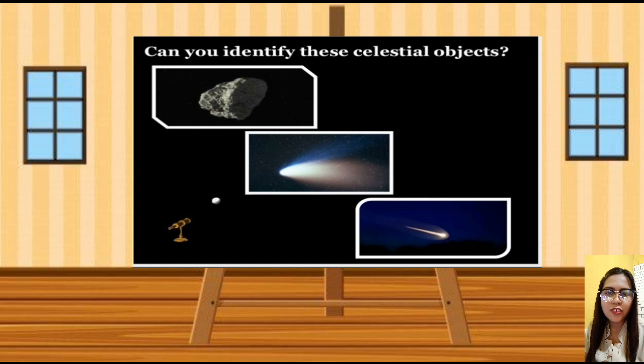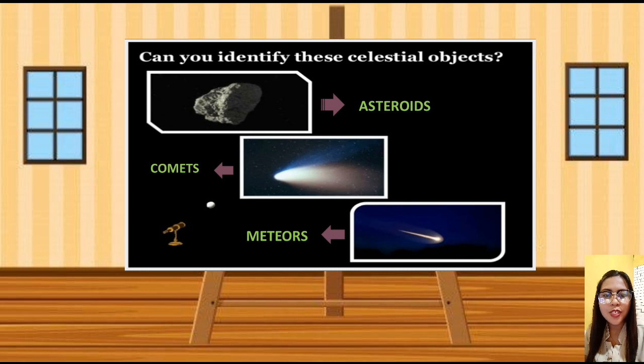What are these pictures all about? Yes, you're right. These are celestial objects. The first picture indicates the asteroids. The second one is a comet. The third one is a meteor.